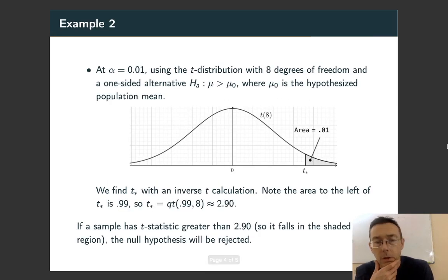Example two. This time let's do a t-distribution with eight degrees of freedom and a one-sided alternative, a right-sided alternative. And let's work at α = 0.01.